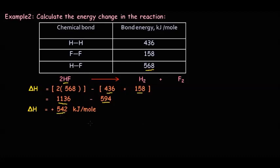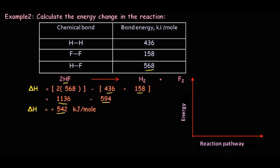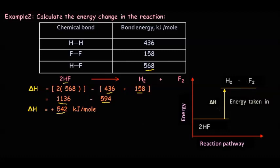Drawing the energy level diagram for this reaction: energy is on the y-axis and reaction pathway on the x-axis. Since it is endothermic, the energy of the reactants is at a lower level and the energy of the products at a higher level. The difference in energy is the ΔH value — the 542 kJ/mol of energy absorbed during the reaction.